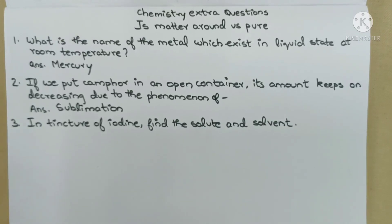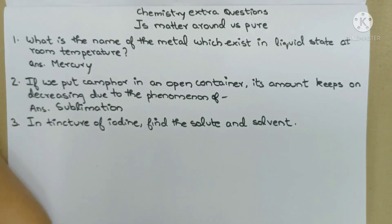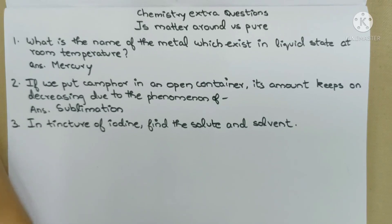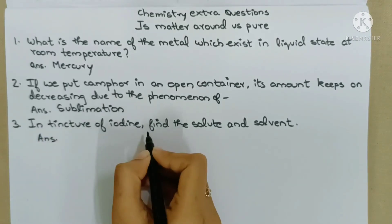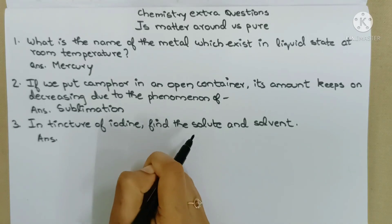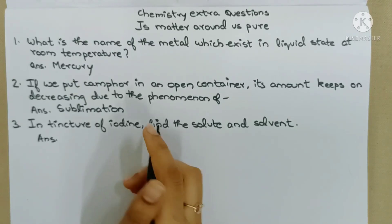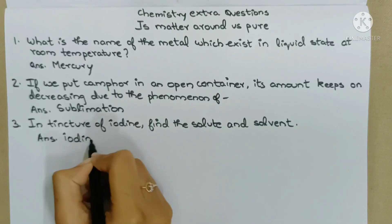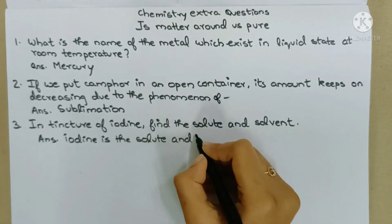Next question: In tincture of iodine, find the solute and solvent. Just like in a sugar solution, sugar is the solute and water is the solvent — in tincture of iodine, iodine is dissolved in alcohol. So iodine is the solute and alcohol is the solvent.